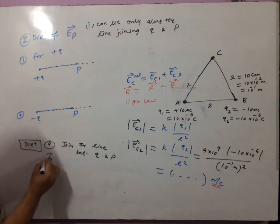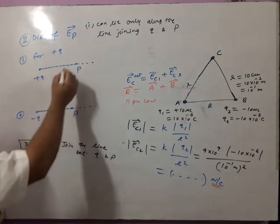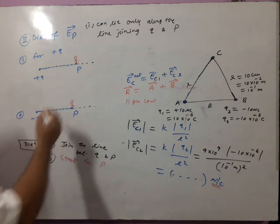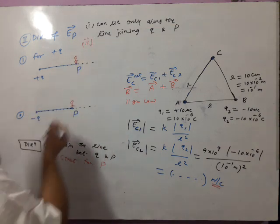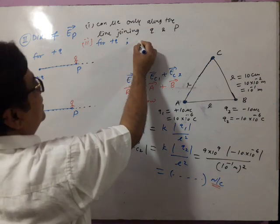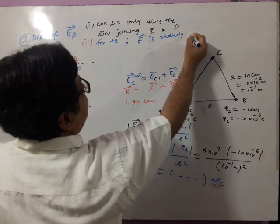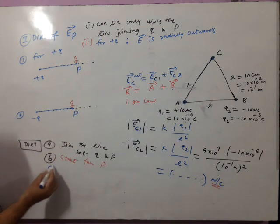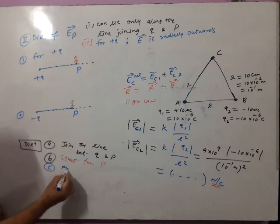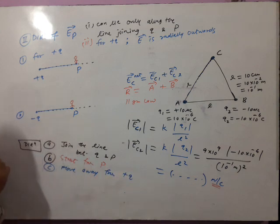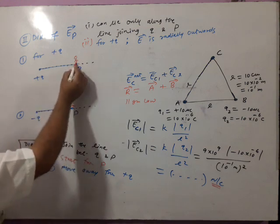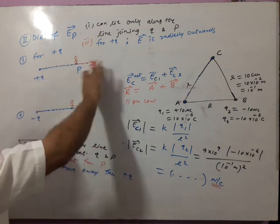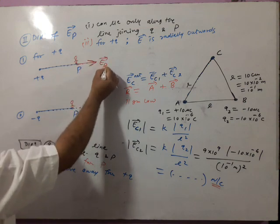Point number 2: you consider yourself standing at P — start from P. For positive charge, electric field direction is radially outwards, meaning away from positive charge. See the point — start from P, move away from positive charge. You have two options while starting from P, moving only along the line joining: either towards positive charge, or away. When it is positive charge, move away — this is radially outward, the direction of electric field at point P.